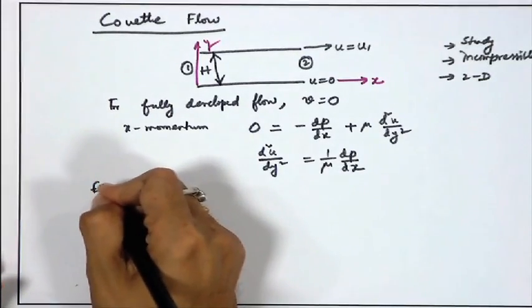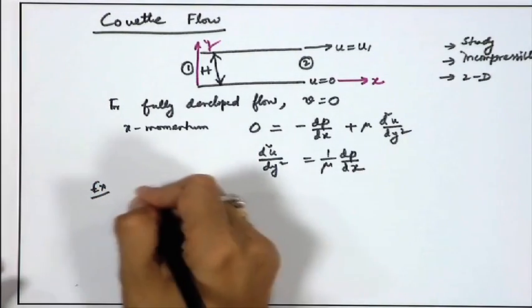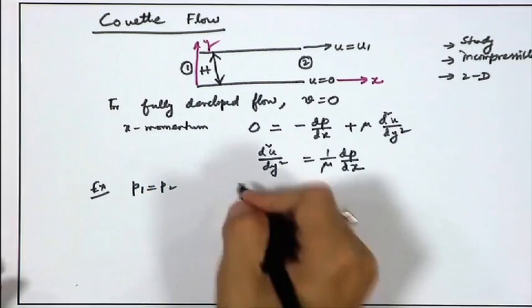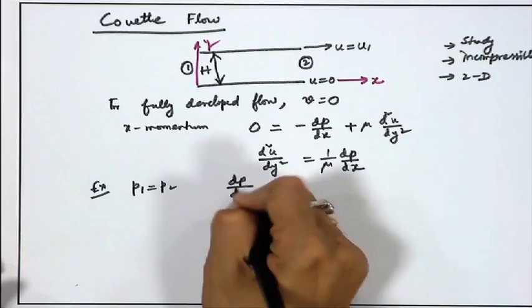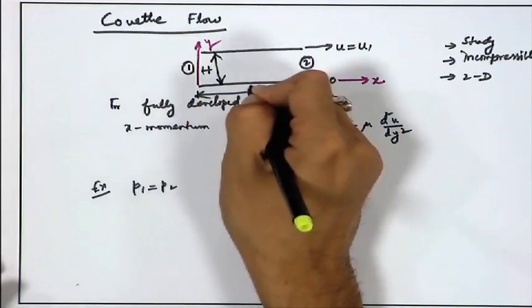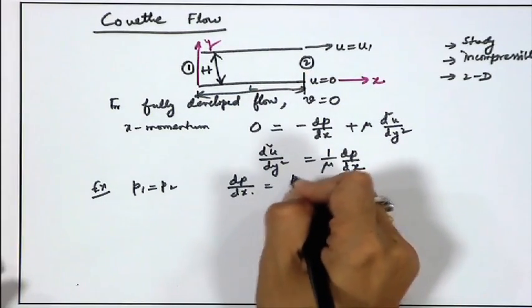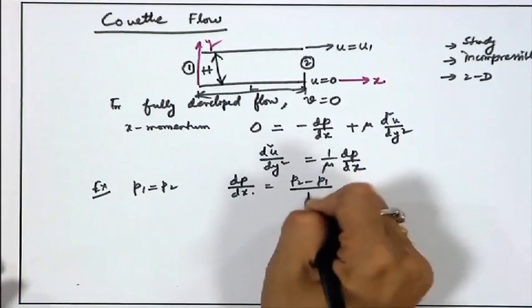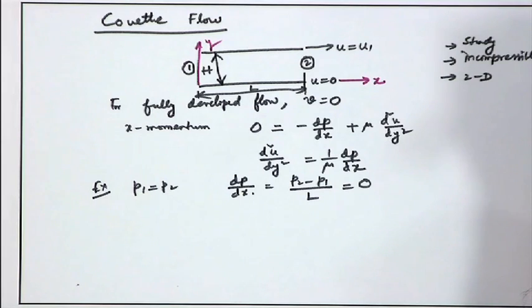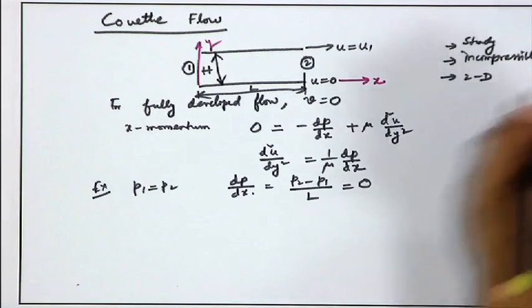As an example, when p1 equals p2, dp/dx equals (p2 − p1)/L equals 0. This is called pure Couette flow — there is no pressure gradient acting on it. Couette flow can also have a pressure gradient, but if there is no pressure gradient, it is called pure Couette flow.